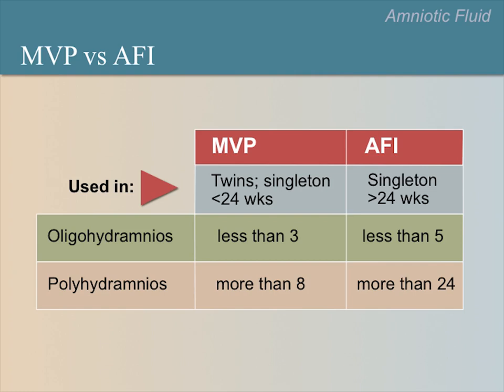Here are more key points. The amniotic fluid has important functions in protecting the fetus. An abnormal amount of fluid can signal an abnormal pregnancy. Oligohydramnios and polyhydramnios can be determined by ultrasound, and proper follow-up is essential for fetal health. If the fluid appears low, perform an AFI.